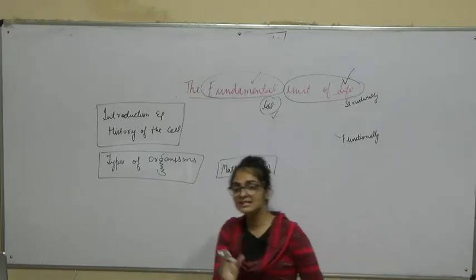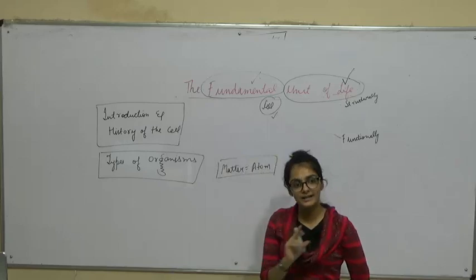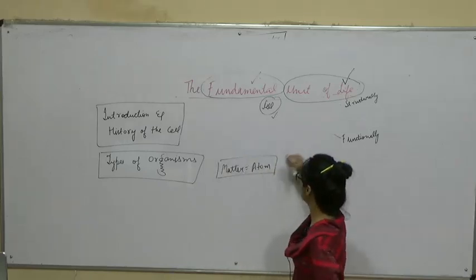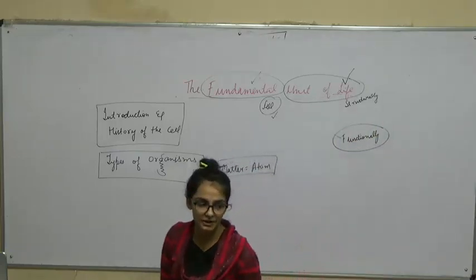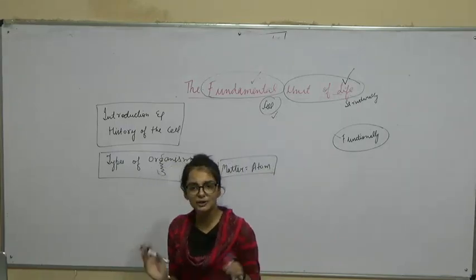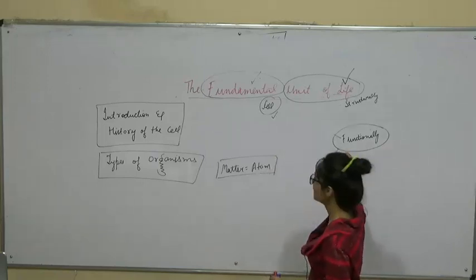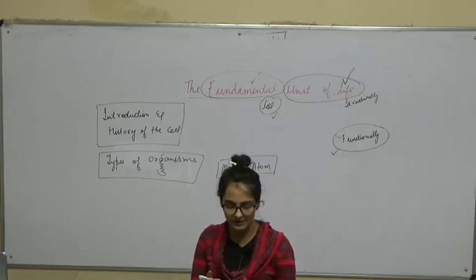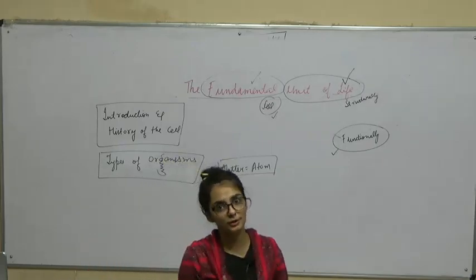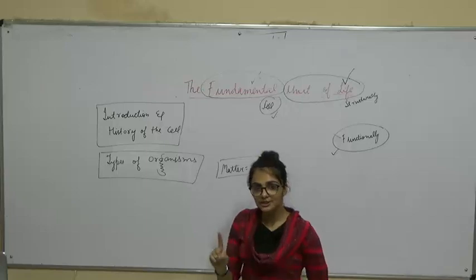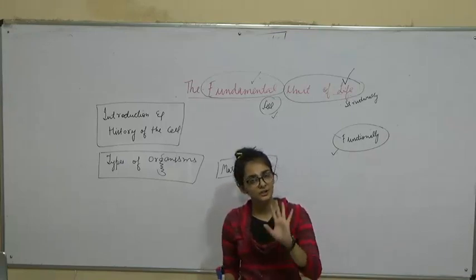Structure — kisi bhi living organism ka structure kahan se shuru hota hai? Base se, matlab neev se. Neev kisi bhi living organism ki kya hoti hai? Cell hoti hai. Now, functionally: life ke different functions hote hain — it can be respiration, it can be digestion, it can be excretion. Yeh sare jo functionally kaam hota hai, these can be performed within a cell. So cell is the fundamental structural and functional unit of life.